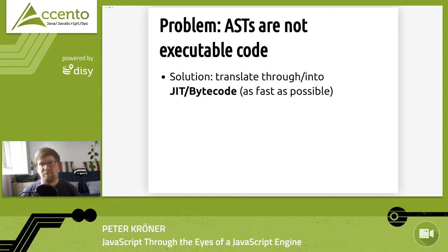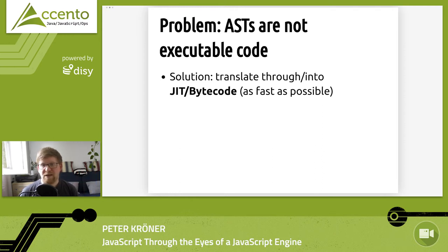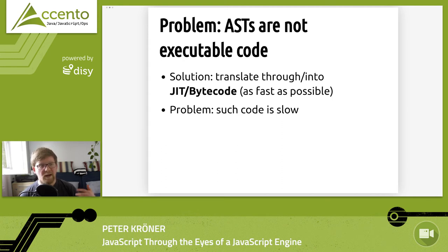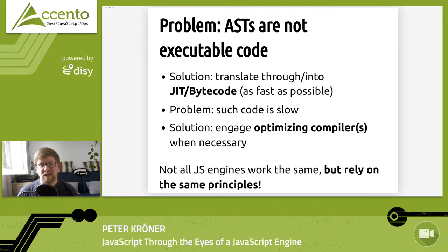An AST is just a data structure — it's not executable code. We need to turn it into executable code, for example bytecode or some instruction set the browser can execute. This step needs to happen as fast as possible when a function gets called — it must be transformed from the AST into runnable code quickly. The problem is: if you compile as quickly as possible, the resulting code is probably not the fastest. But JavaScript engines have a solution for this.